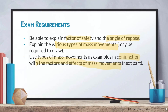Use the types of mass movements as examples in conjunction with the factors and effects that I'll explain in Part 28. You can search for case studies online, as geography requires them. These mechanics form the causal links for your explanations, such as understanding why climate and water content are so important to most mass movements.